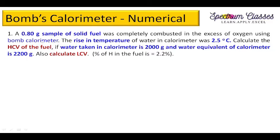Let's start with the examples. The first example: since in the bomb calorimeter we are using liquid fuel as well as solid fuel — volatile liquid fuels are not determined in the bomb calorimeter. A 0.80 gram sample of solid fuel was completely combusted in excess of oxygen using bomb calorimeter. The rise in temperature T2 minus T1 is given; individually T1 and T2 are not given.